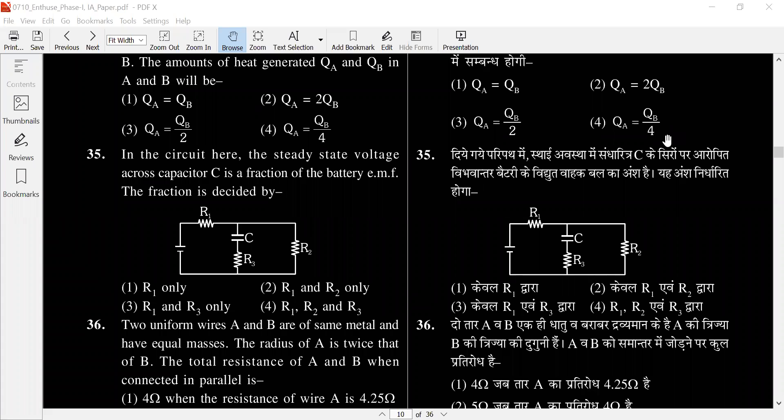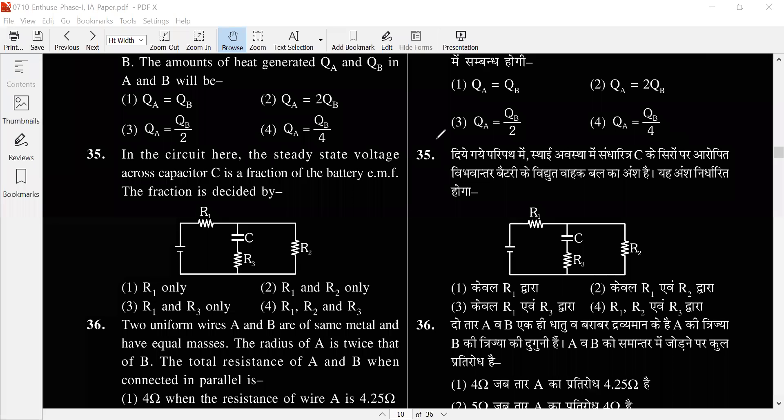Let's see. The simple question is: what do we have in this circuit? The steady-state voltage across capacitor C is a fraction of the battery EMF. If we use the battery EMF, then the voltage across this capacitor is a fraction of the battery. So who will decide that fraction?